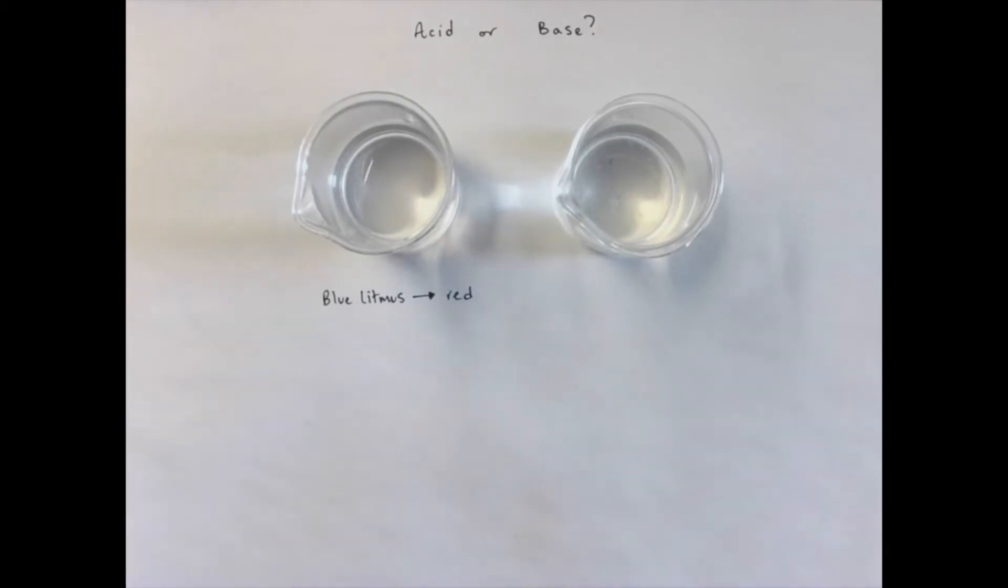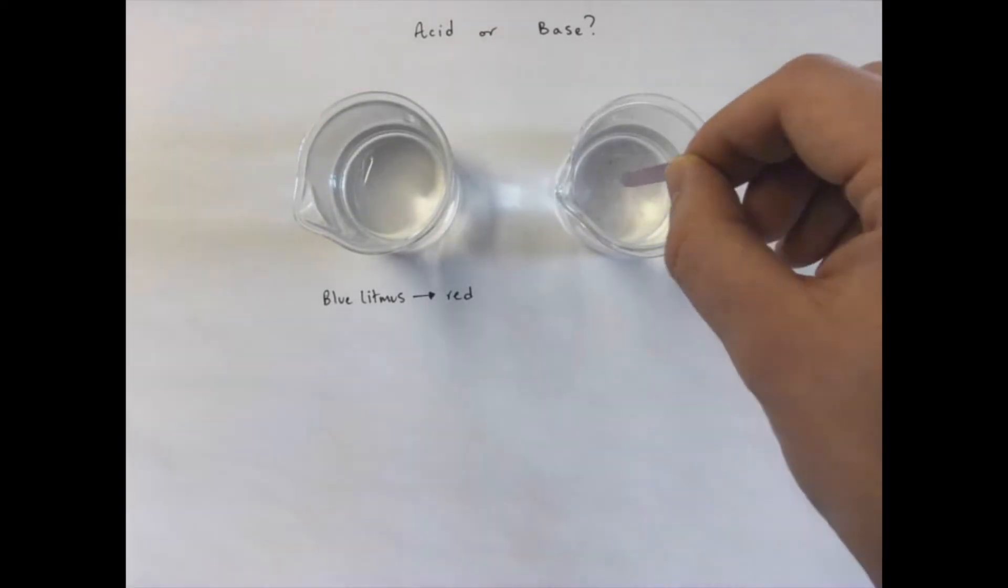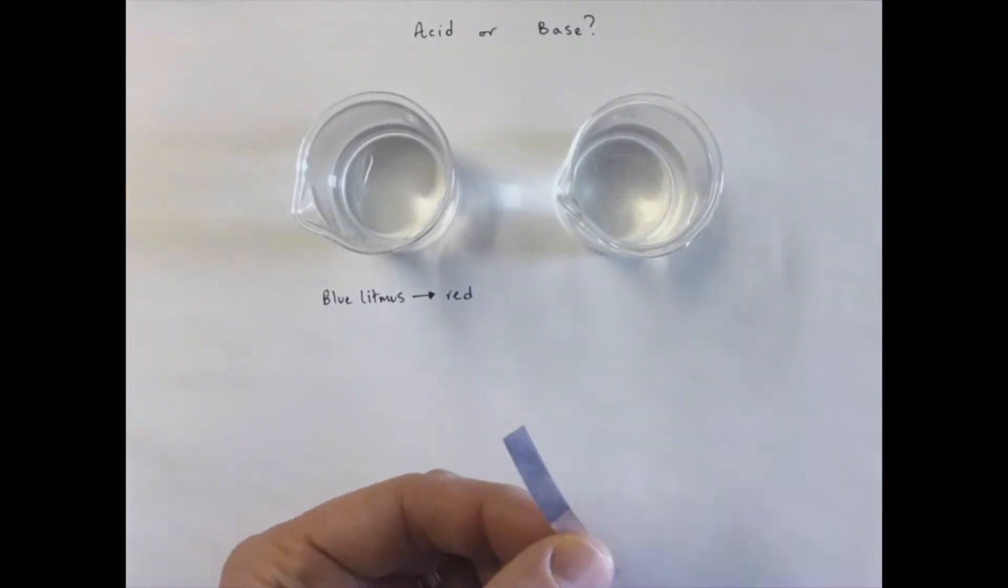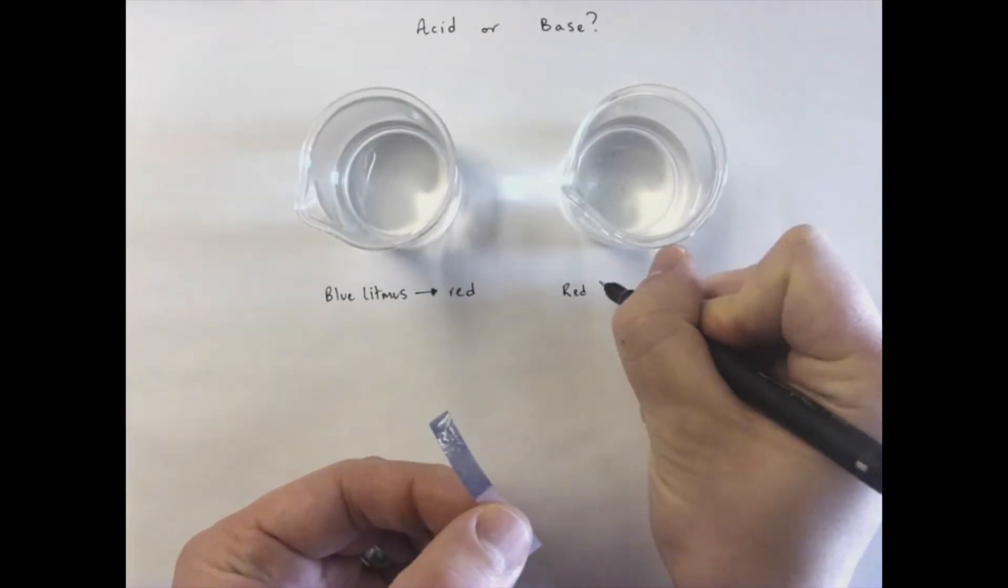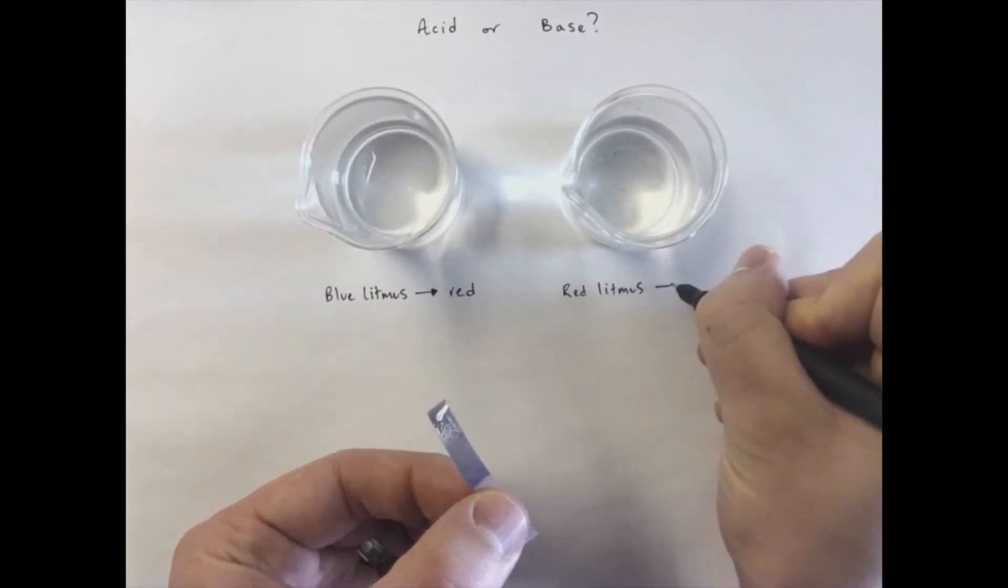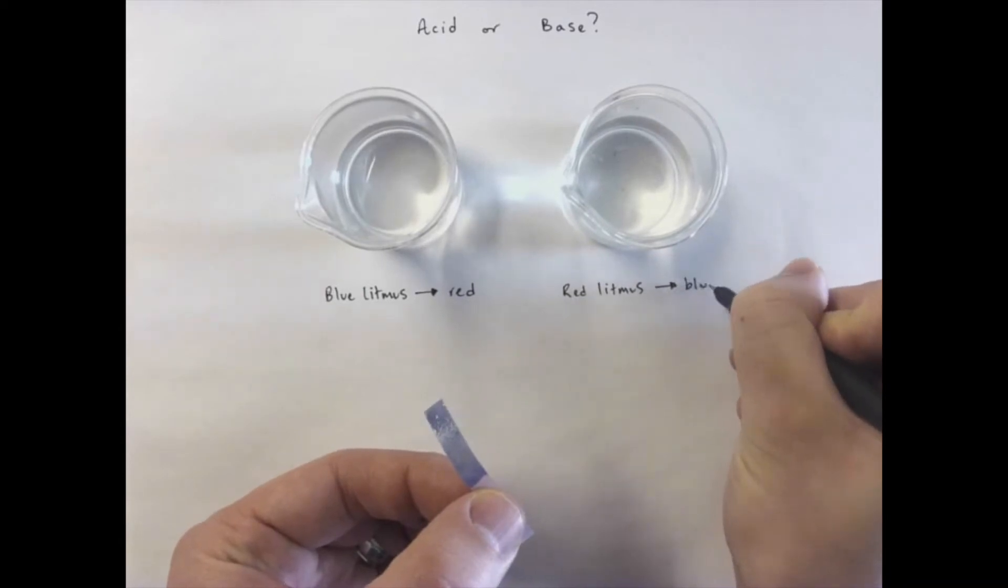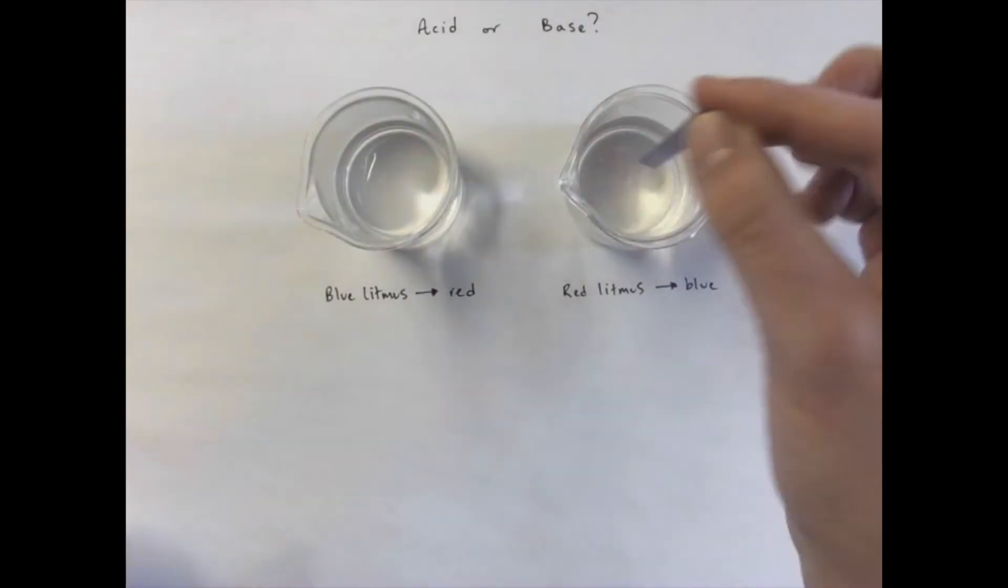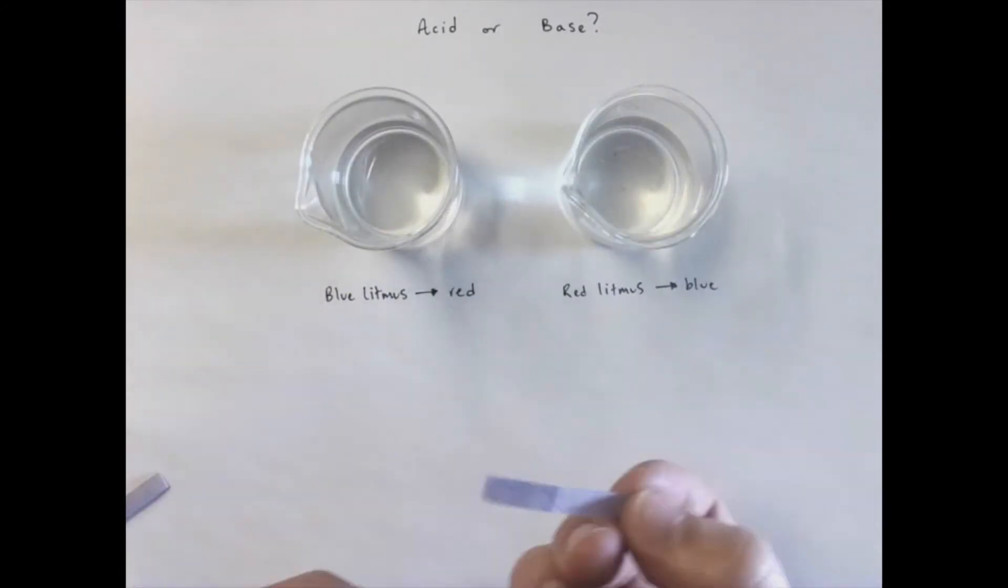So let's do the opposite. Let's take some red litmus paper and apply it to this solution. What do we notice happen? Well, it turns blue. So we get red litmus paper turning blue. Let's take some blue litmus paper and see what the second solution does to blue litmus paper. It will stay blue.